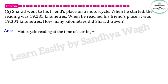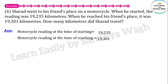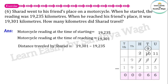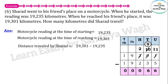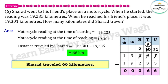The motorcycle reading at the time of starting was 19,235 kilometers, and at the time of reaching was 19,301 kilometers. To find the distance traveled by Sharad, we subtract: 19,301 minus 19,235 equals 66 kilometers. So our final answer is: Sharad traveled 66 kilometers.